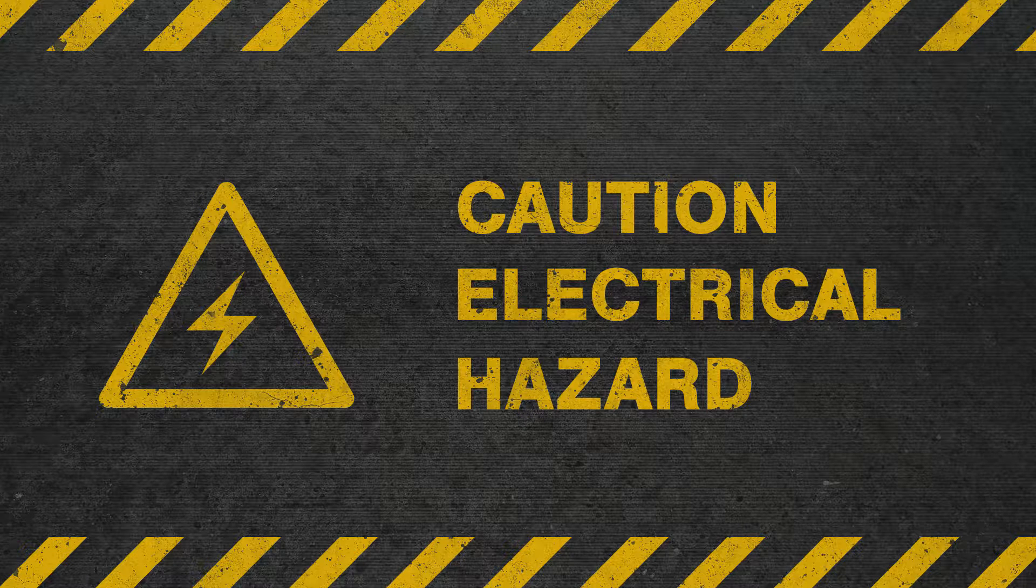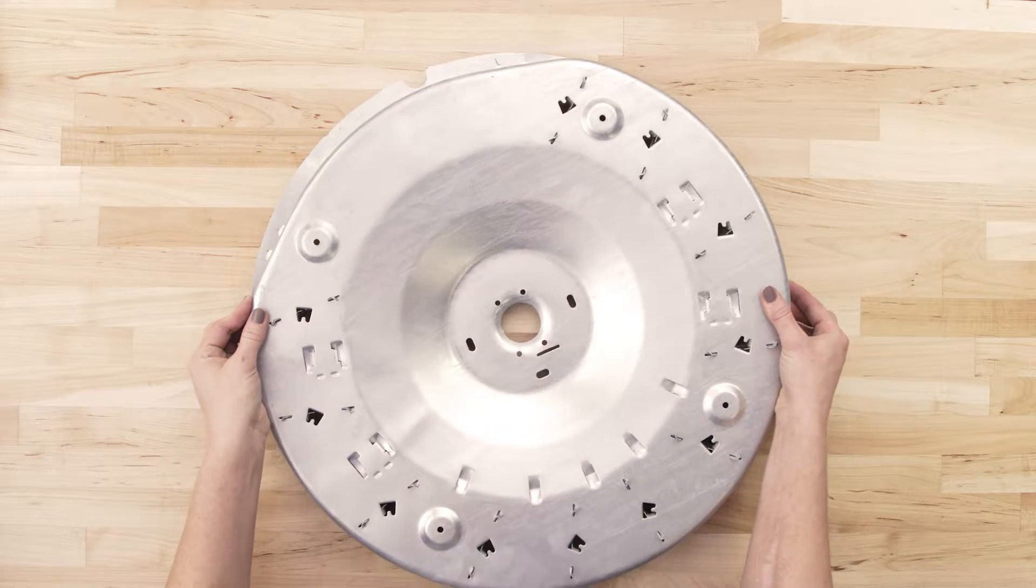To be safe, turn off the breaker and fully unplug the dryer from the receptacle. Now separate or remove the heating element.